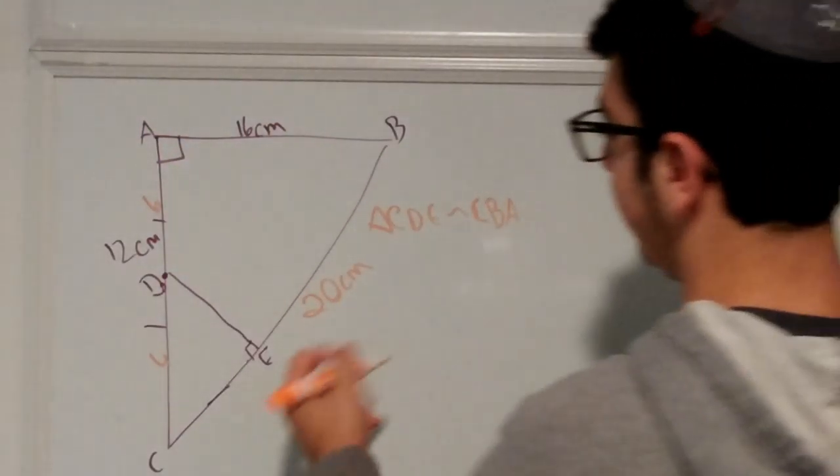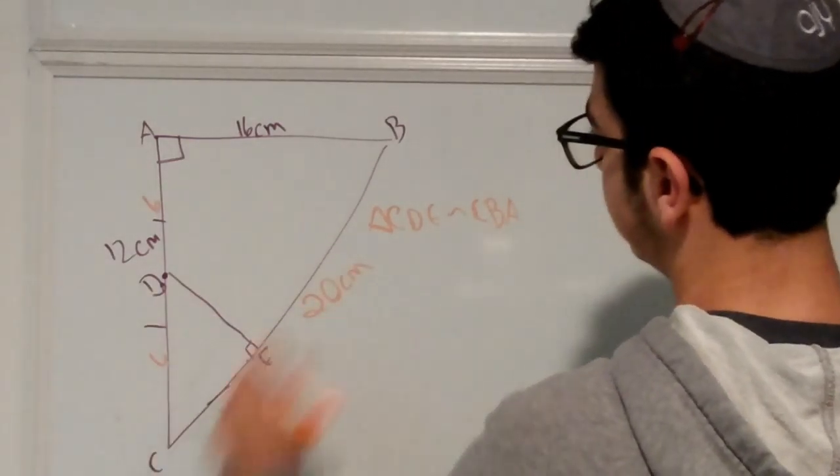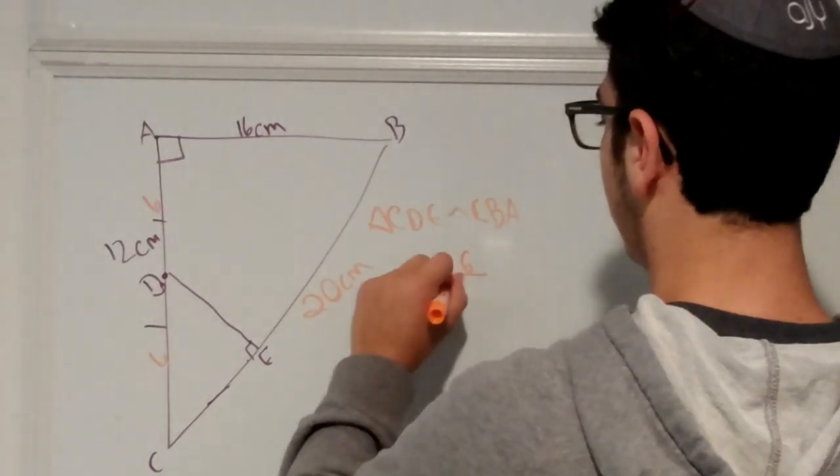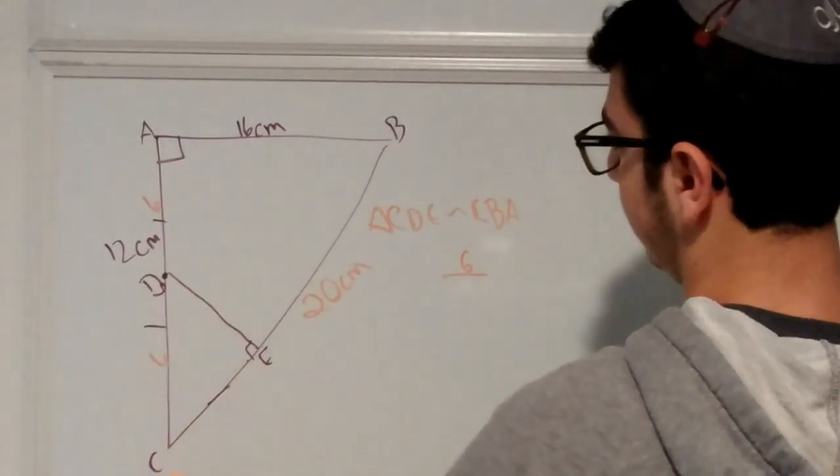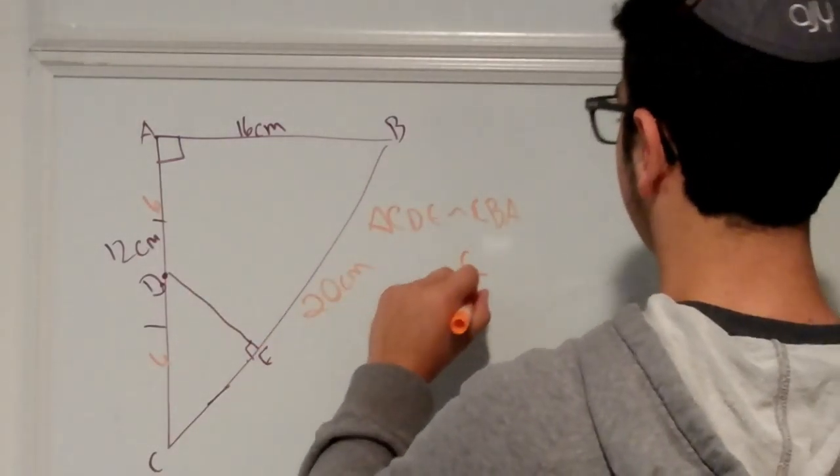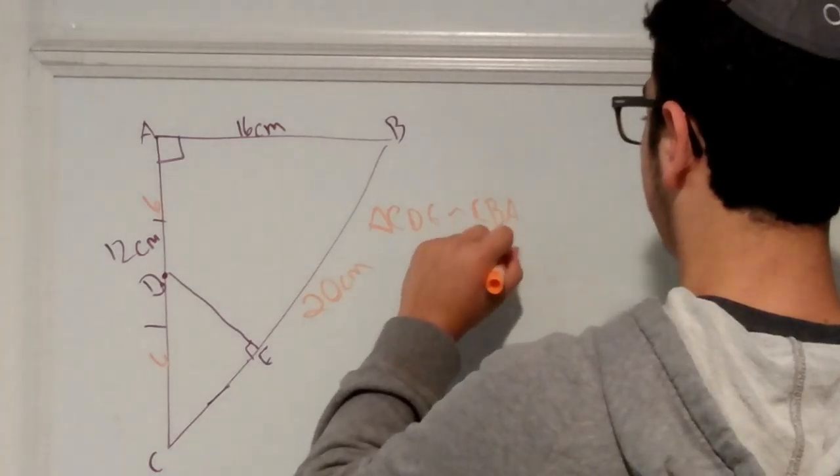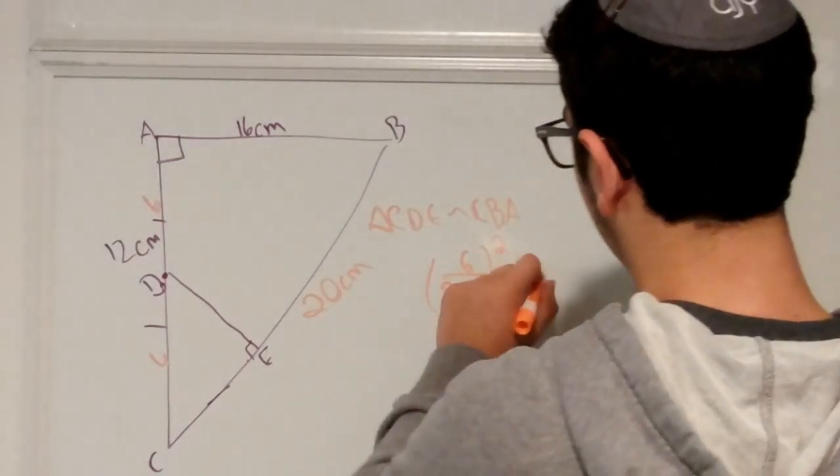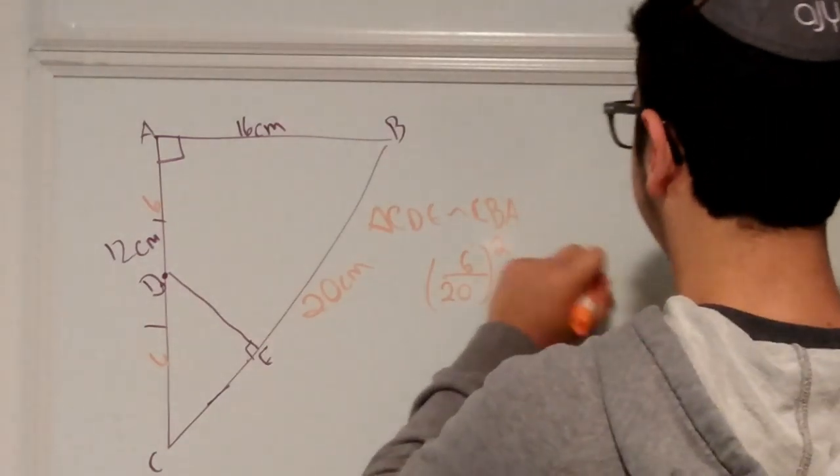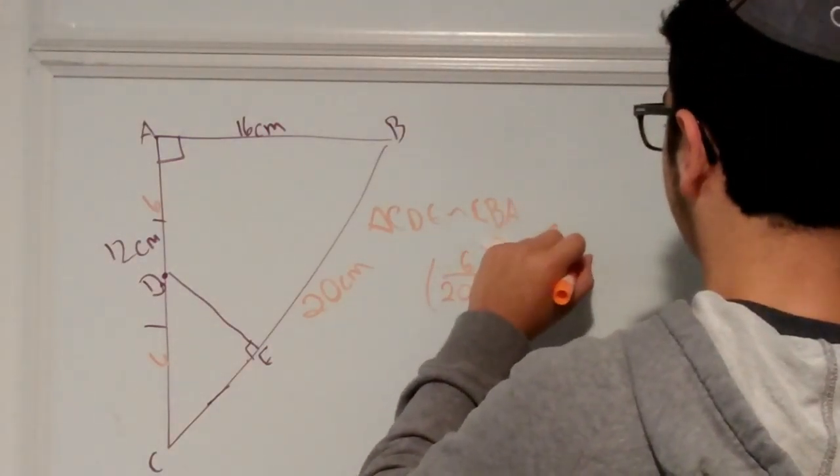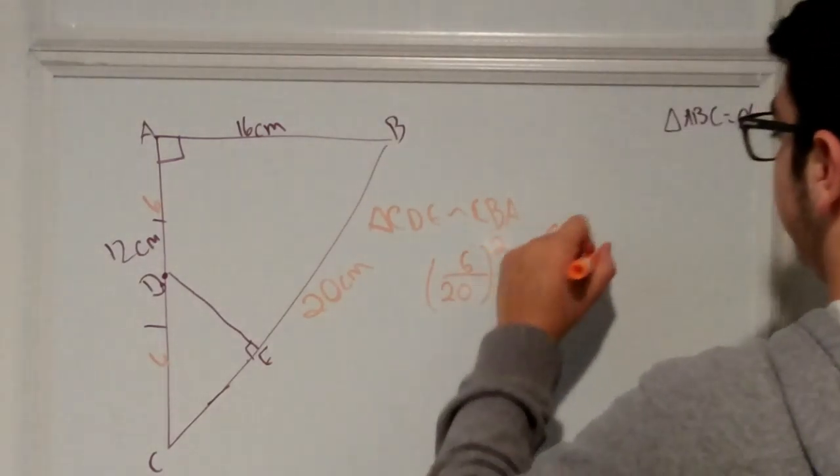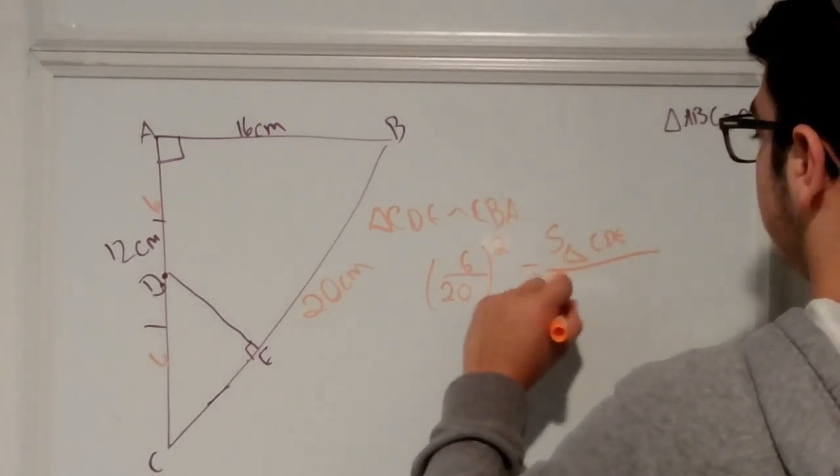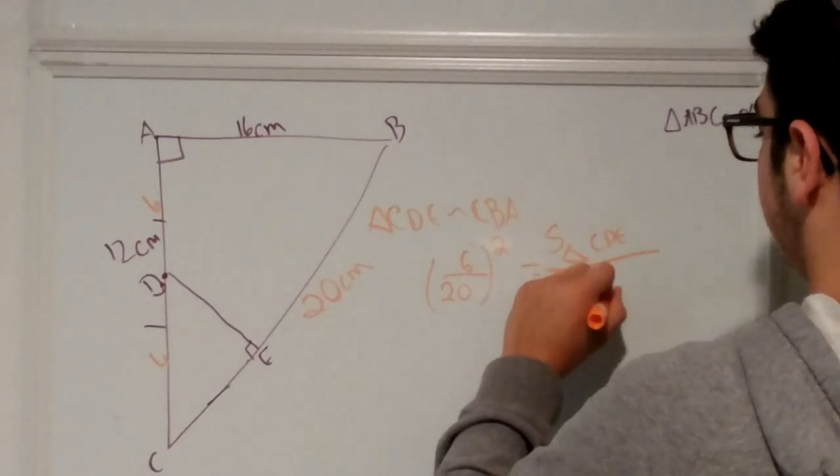So now from this, we can say that since this is the ratio, this is both of them, you can say that 6 over, and this right here is 20, squared is equal to the area of CDE over the area of CBA.